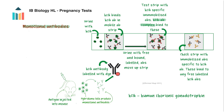As the urine continues to move along the test strip, the HCG antibody complexes reach the test area here, where there are more immobilised antibodies specific to HCG. The HCG antibody complexes bind to these immobilised antibodies, resulting in the formation of a coloured line that indicates a positive pregnancy test.